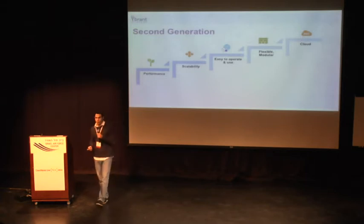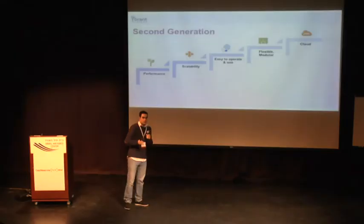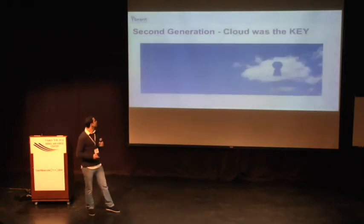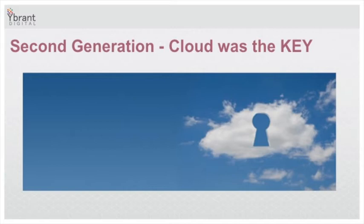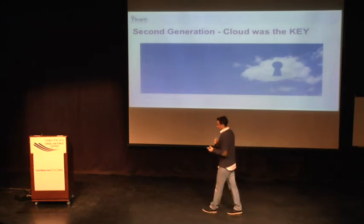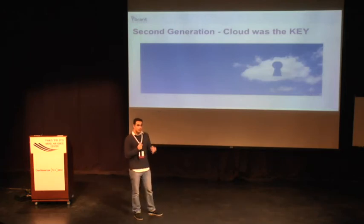When we built the second generation of OneTag, our standards were fast, scalable, and simple. We invested a lot in performance and scalability, wanted it to be easy to operate and use, tried to code it as flexible and modular as possible, and wanted it to be a cloud-oriented architecture. Cloud was really the key for us — we consider cloud a critical tool for a fast-growing company if you want to react fast to your business needs and grow as your business grows.